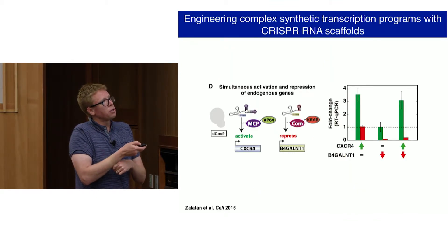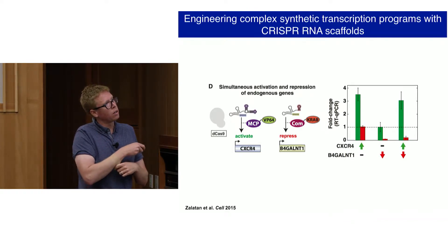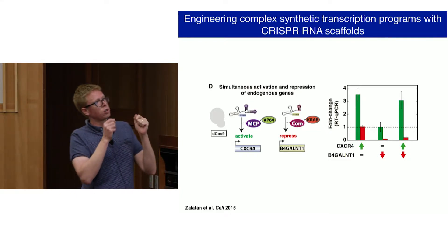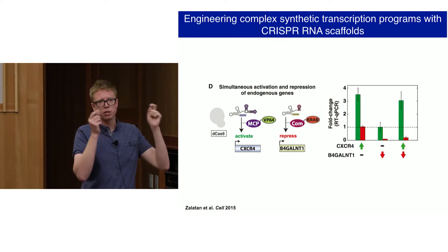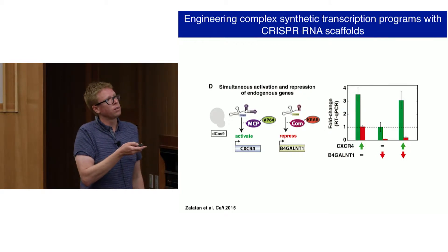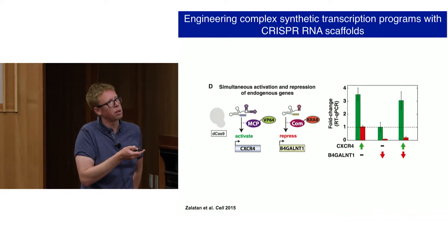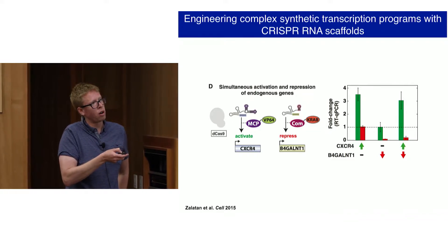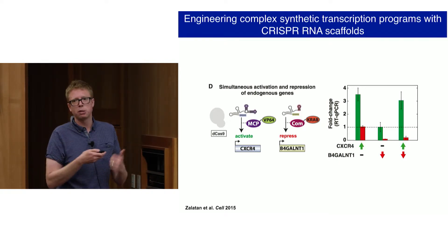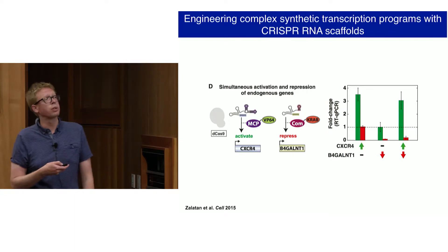This also works in human cells. Using the MS2 or COM-CRaB system, we showed that with one dCas9 we can control expression of two genes simultaneously — activating CXCR4 expression while turning off B4GalT1, or turning one on and the other off at the same time using one dCas9 scheme. This increases flexibility for controlling transcription across the genome.